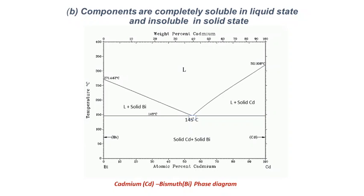Temperature in degrees centigrade is recorded on the y-axis. We first mark the melting point of bismuth, which is 271°C, and the melting point of cadmium, which is 321°C. These are the limiting boundaries for the pure forms of bismuth and cadmium that separate the liquid phase from the solid phase.